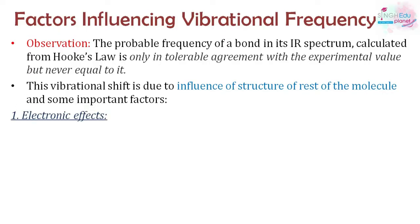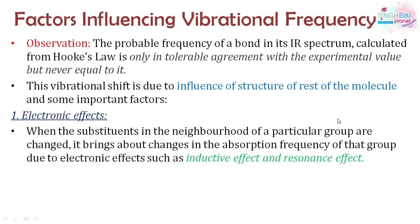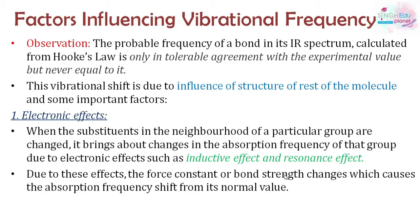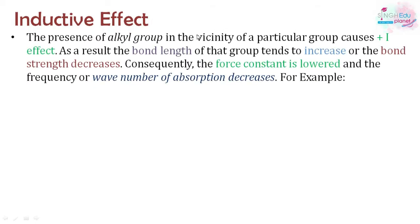The first factor is electronic effects. When substituents are present near a particular group, they change the absorption frequencies through inductive and resonance effects, altering the force constant and bond strength. For example, an alkyl group has a +I (positive inductive) effect, acting as an electron-donating group. This increases bond length and decreases bond strength, which decreases the force constant and therefore decreases the wavenumber of the absorption band.